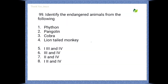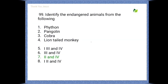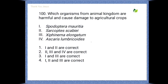Next question: identify the endangered animals from the following. Options are: python, pangolin, cobra, lion-tailed monkey. The correct option is second and fourth — that means pangolin and lion-tailed monkey.